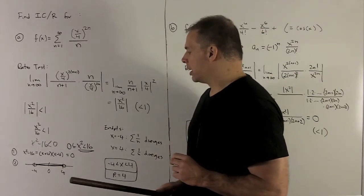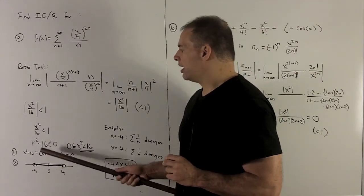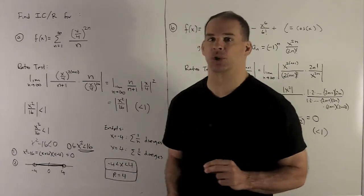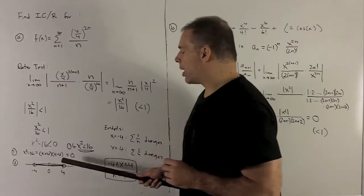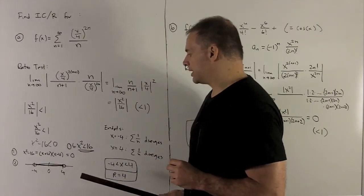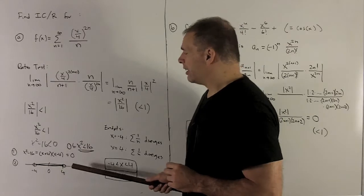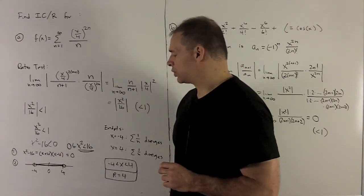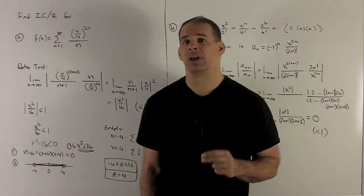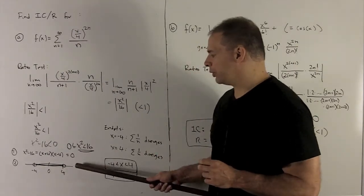Check a point in each region. 0 is a good one for the middle. If I put 0 in there, I'm going to have minus 16 less than 0. Is that true? Yes. So I'm going to get the whole entire middle region. Let's take 1 on the outside here. How about if I take 5? If I put 5 into this, we're going to have 25 minus 16, which is 9. Is that less than 0? No. So this region, we do not keep.